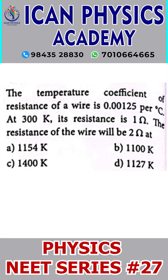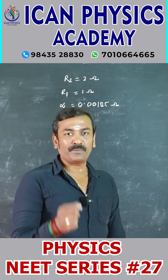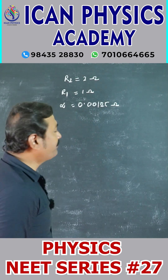The temperature coefficient of resistance of a wire is 0.00125 per degree Celsius at 20 degrees Celsius. Its resistance is 1 ohm. The resistance of the wire will be 2 ohm — the question asks for the temperature.